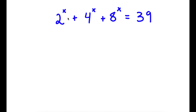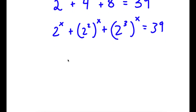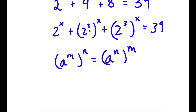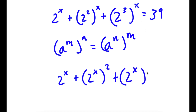In this problem, I have 2 to the power of x plus 4 to the power of x plus 8 to the power of x is equal to 39. To solve this, I'm going to first rewrite this as 2 to the power of x plus 2 squared to the power of x plus 2 to the power of 3 to the power of x is equal to 39. If I have something in the form a to the power of m to the power of n, this is the same as a to the power of n to the power of m. So I can rewrite 2 squared to the power of x as 2 to the power of x squared, and 2 to the power of 3 to the power of x as 2 to the power of x cubed.